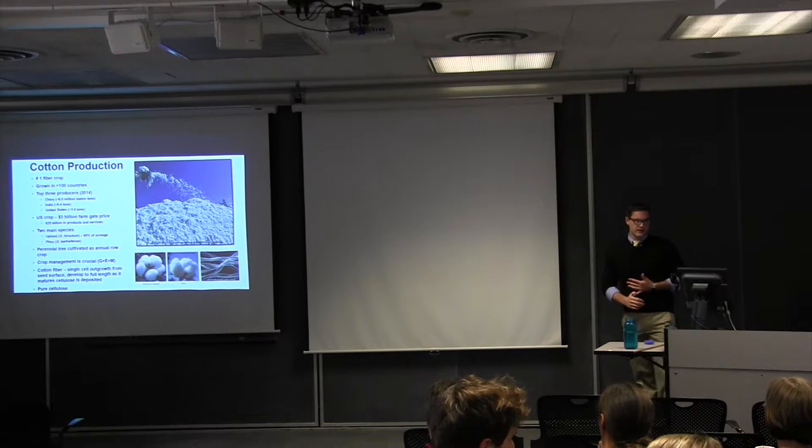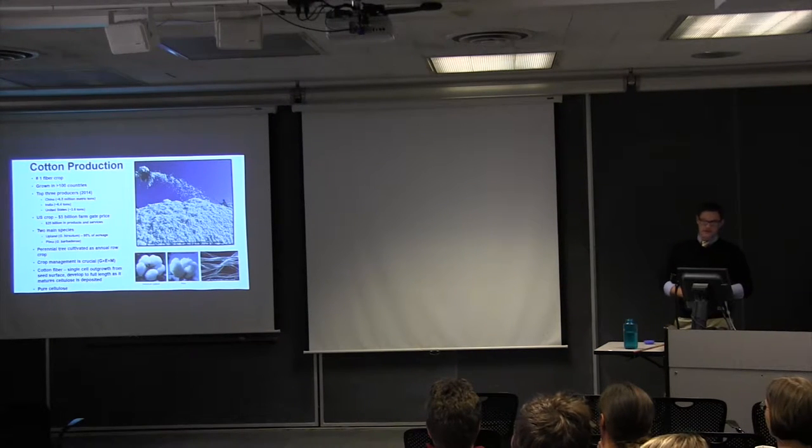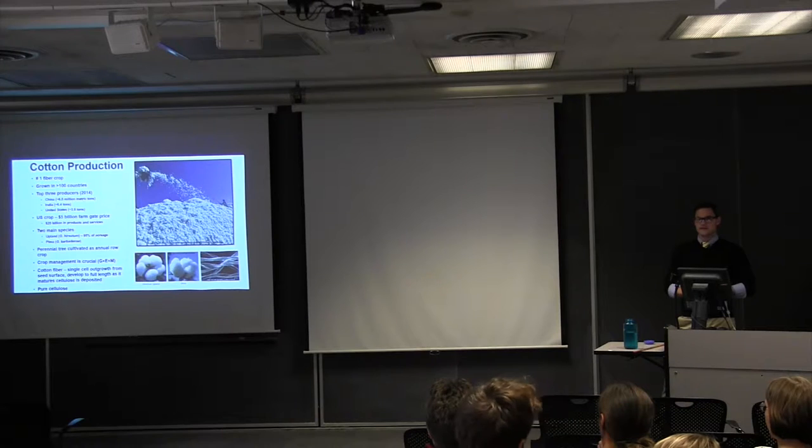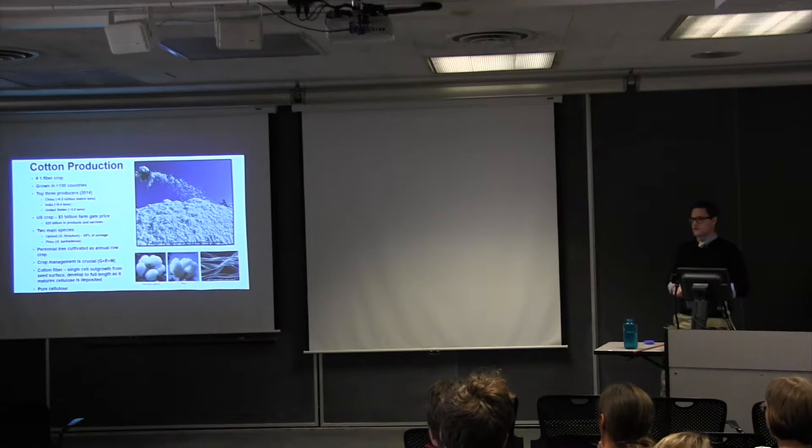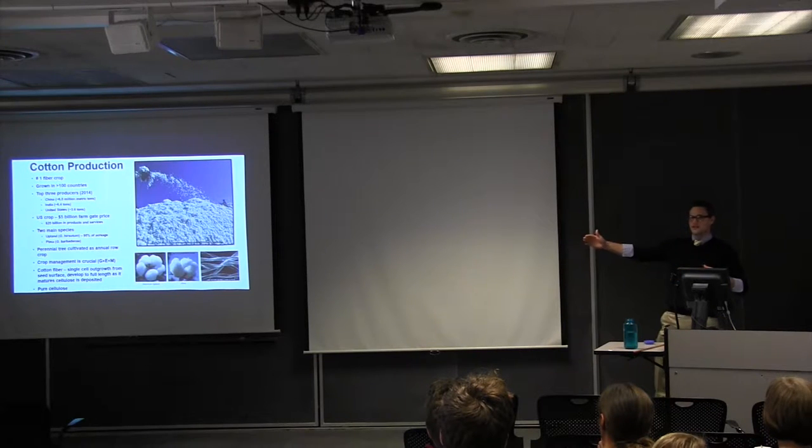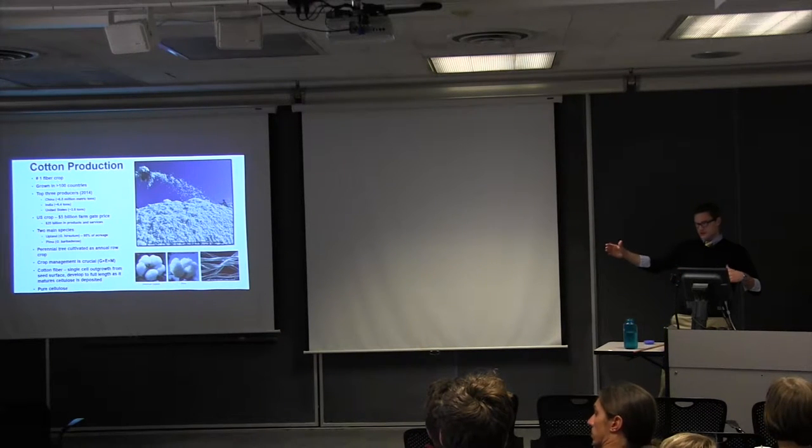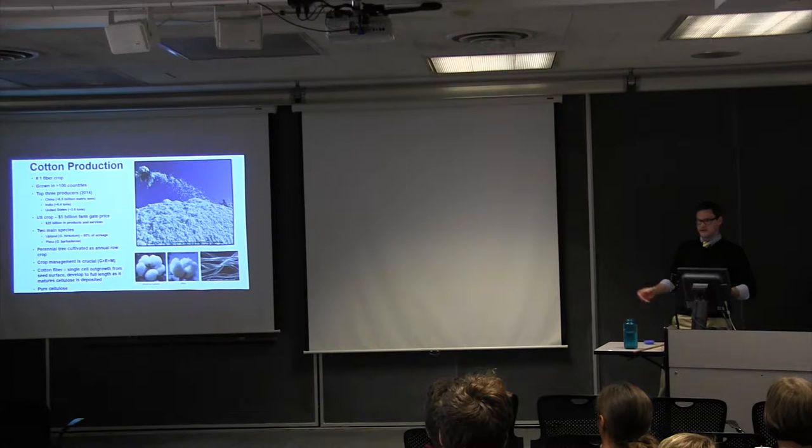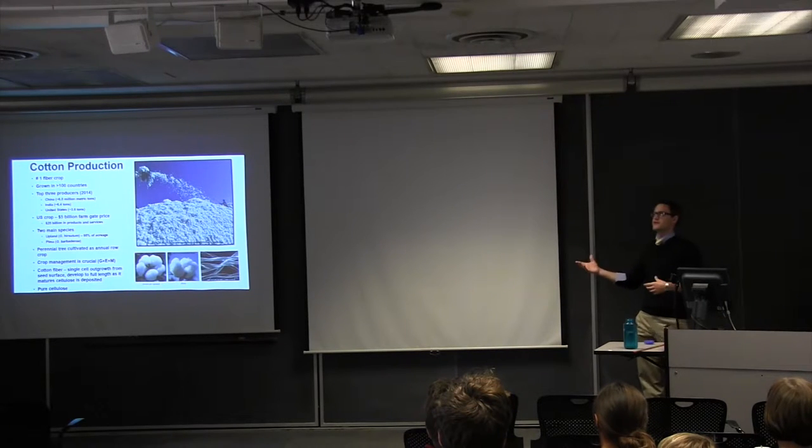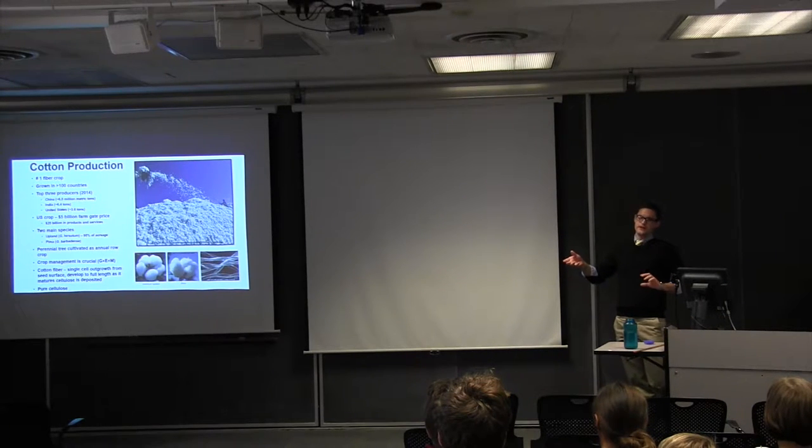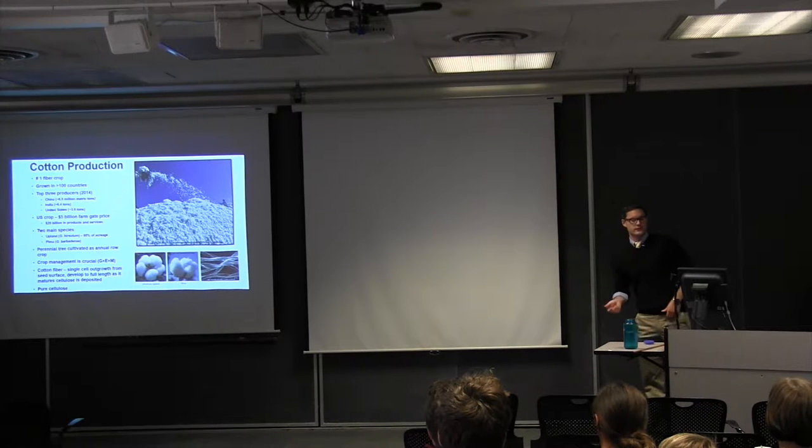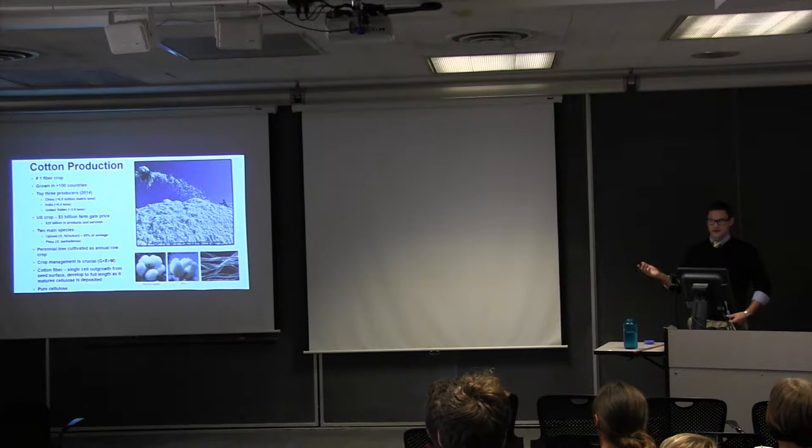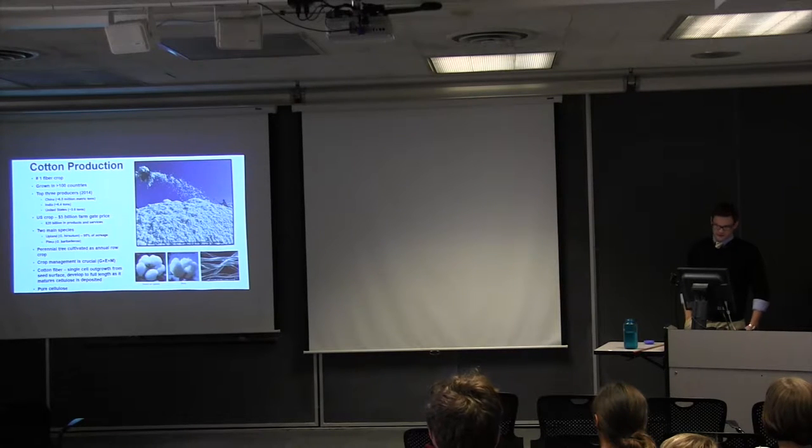With that being said, the cotton fiber itself is pretty interesting, the fact that it's a single-cell outgrowth from the surface of the seed. And so what happens is this cell elongates for a while, and then after it reaches its defined length, it puts on cellulose, it essentially bulks up. At the end of the season, it dries down, and it twists, and it forms this helical structure, which is what gives it its mechanical properties. And the other thing that's interesting is that the fiber itself is 100% pure cellulose.